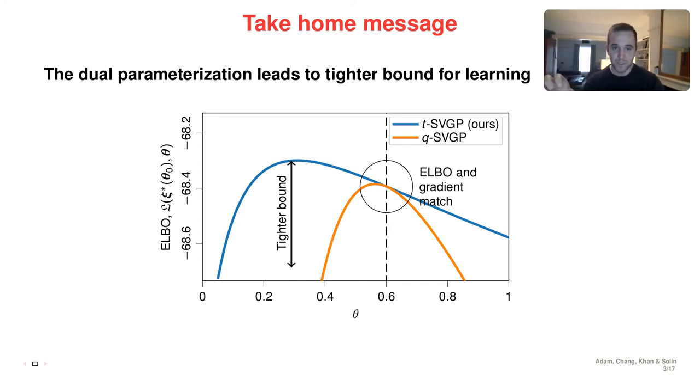The take-home message: the Dual Parameterization leads to a tighter bound for learning. Variational inference turns inference into optimization, and it's an optimization of a lower bound to the marginal likelihood. The tighter this lower bound, the better the learning is going to be, and we show that we get a tighter bound.